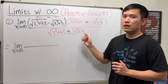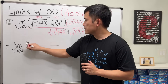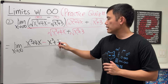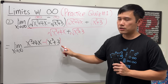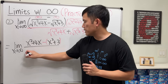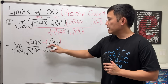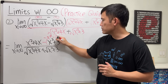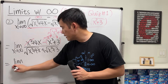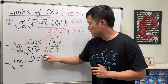When you multiply an expression by its conjugate using (a − b)(a + b) = a² − b², the numerator becomes the inside terms: x² + 4x minus (x² + 3). Remember to put parentheses around the second term because of the minus sign — you have to distribute. This gives x² + 4x − x² − 3. The x² terms cancel, leaving the limit as x approaching infinity of (4x − 3) over that bottom expression.